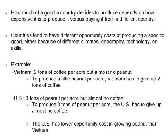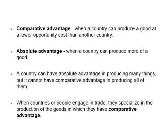In this example, the US has a lower opportunity cost in growing peanut than Vietnam. When a country can produce a good at a lower opportunity cost than another country, we say that country has a comparative advantage in that good. The United States has comparative advantage in growing peanut because it has to give up less coffee per acre to grow peanut. Comparative advantage is not the same as absolute advantage. Absolute advantage is when a country can produce more of a good than other countries. A country might have absolute advantage in many things, but it cannot have comparative advantage in producing all of them.